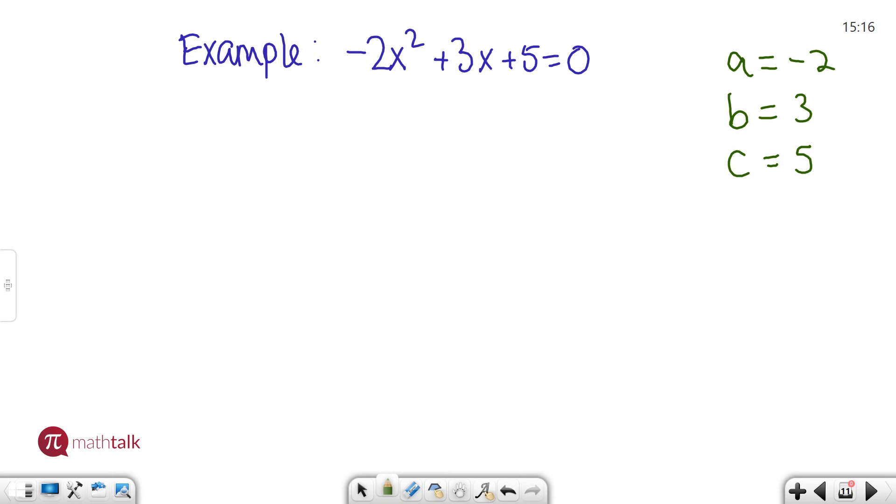So let's plug them in and start simplifying. x equals negative b plus or minus square root of b squared, which in this case is 3 minus 4 times a times c, all over 2 times a, which is again negative 2. Let's start simplifying.